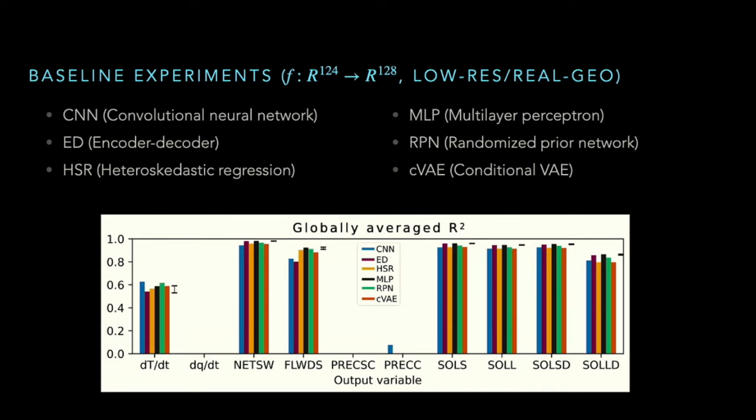Now I will walk you through some key results from the baseline experiment. We only use a subset of the full variables in order to make our experiment similar to previous attempts documented in the literature. You are looking at a globally averaged R-squared here. The first observation is that some output variables are much harder to predict than the rest, implying where to channel our future effort. The second observation is that if you look at each individual output variable, you will not see too much difference across the six baseline models. This is an artifact of the globally averaged metric being insufficient in our domain.